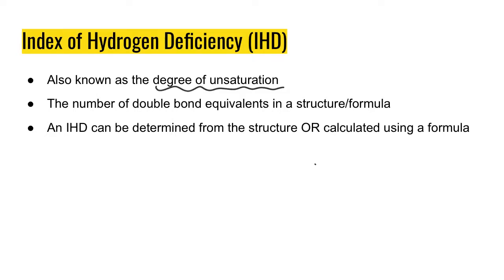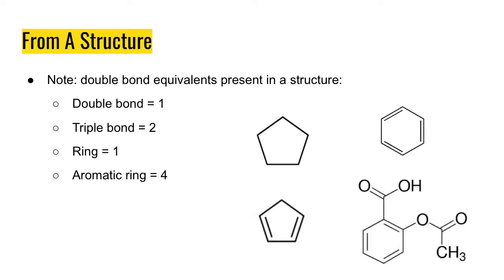We can determine it either from the structure or from the formula, and I'm going to show you an example of each. From a structure, what we're going to be doing is just counting up the number of double bond equivalents. We need some rules to follow as we're counting those up.